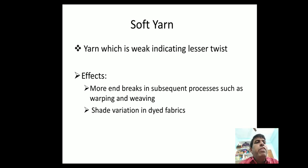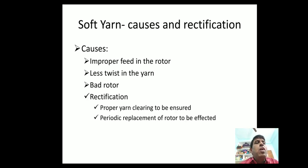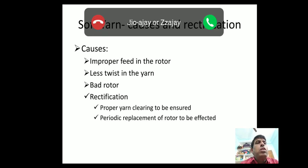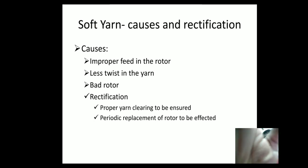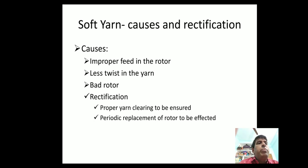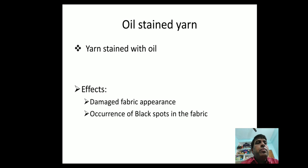Soft yarn also causes shade variation in dyed fabrics. Causes include improper feed in the rotor and less twist in a bad rotor. Rectification involves ensuring proper yarn clearing and periodic replacement of the rotor.